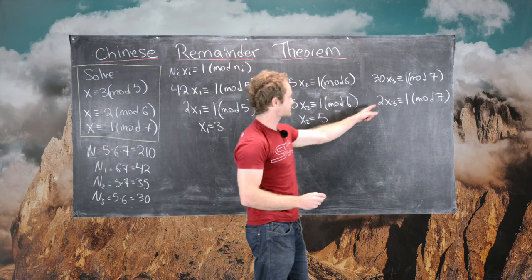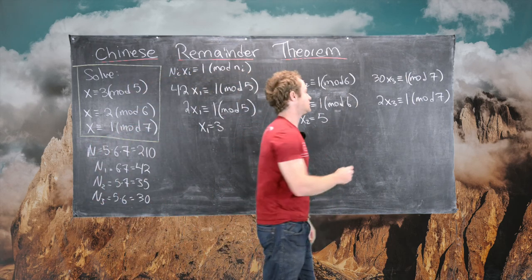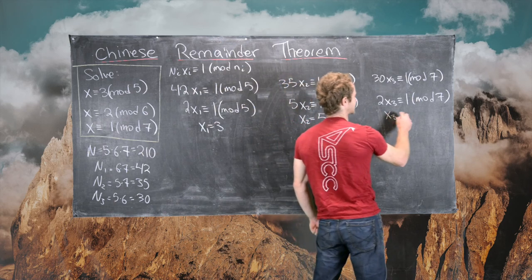And then finally, 2 times 4 is equal to 8, which is 1 mod 7, so we can take X3 equal to 4.